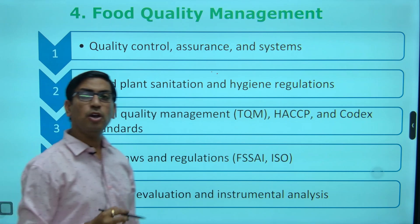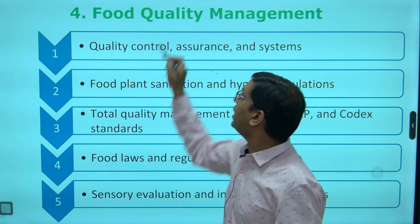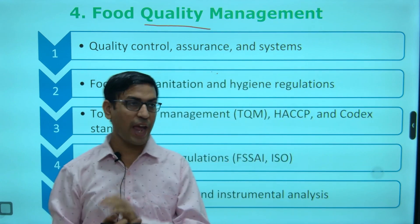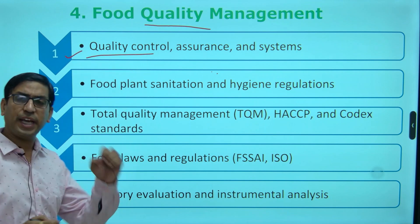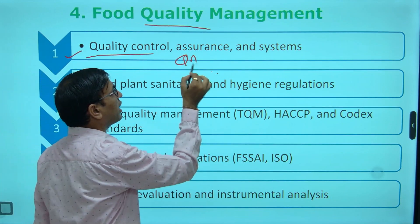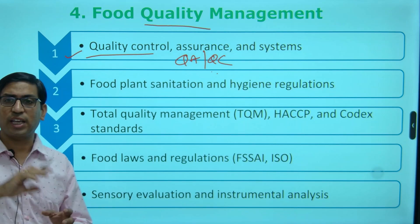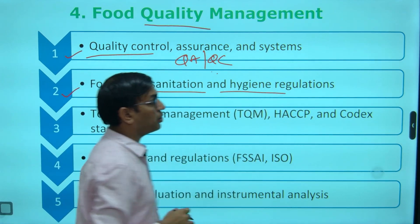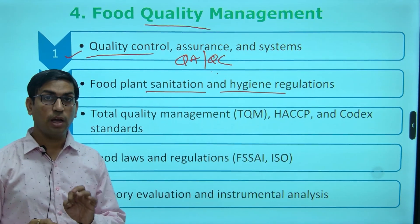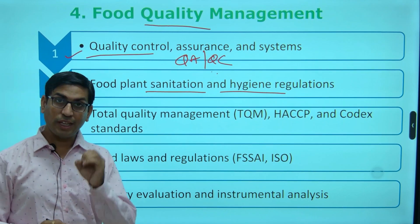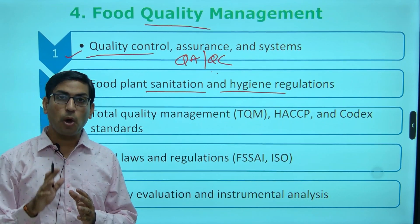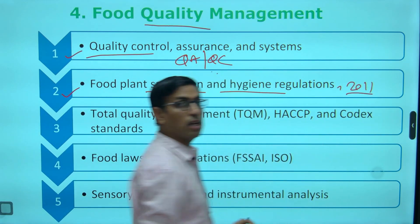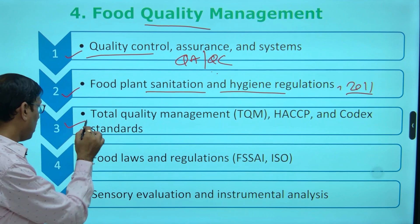Next could be food quality management. Here some key quality concepts came into act — how the degree of excellence came into act. Quality control, quality assurance — QA and QC — what is the difference, what are the key components, what is the quality system and quality culture? Then food plant sanitation and hygiene regulations — what are the key requirements for the industry with concern to proper hygienic regulations, including 2011 food safety standard regulations. Then TQM — total quality management — how many steps, how many principles.